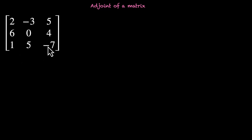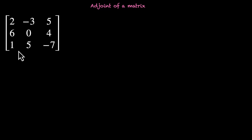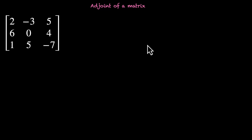To find the adjoint of this matrix, we'll have to figure out its cofactors. And for cofactors, we'll have to figure out its minors. Now this is the same matrix that we've been playing with over the last few videos, so let's just write down its minors and cofactors.